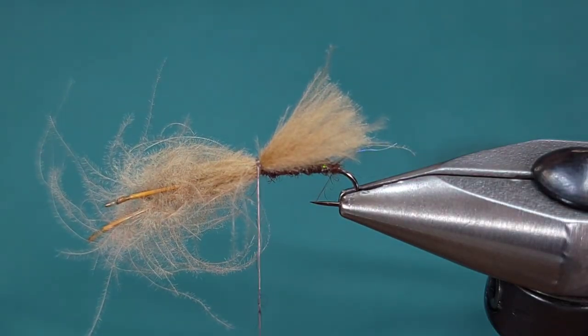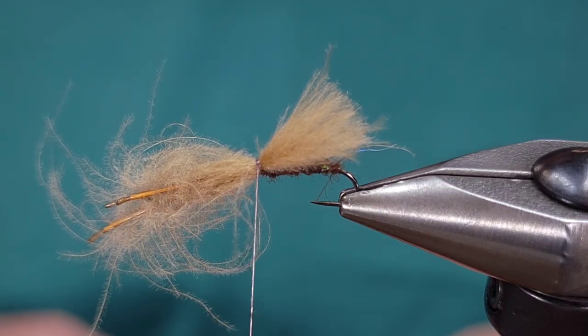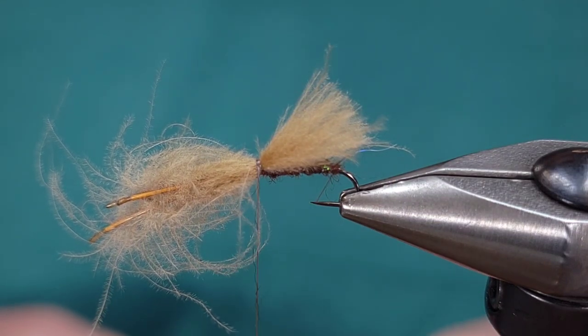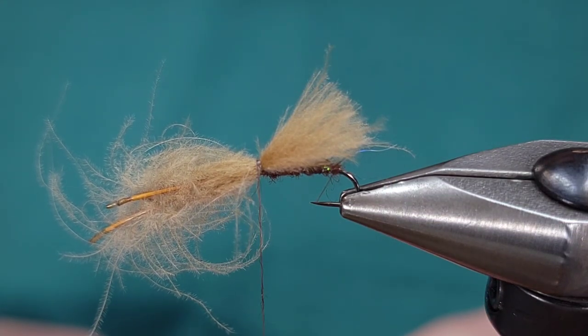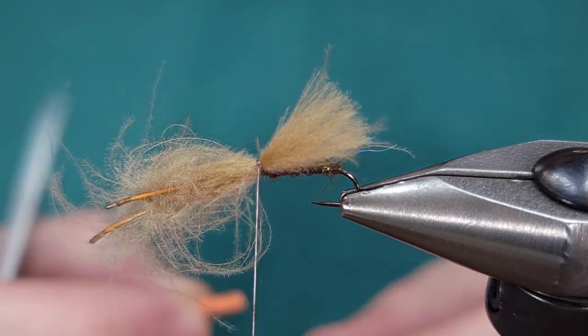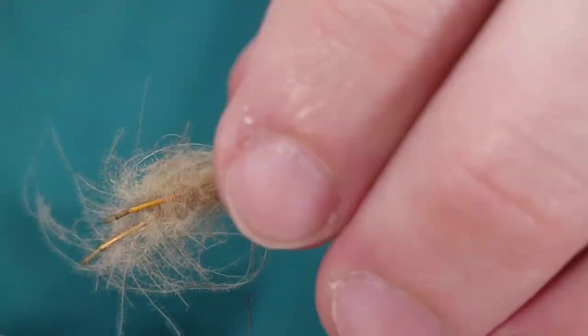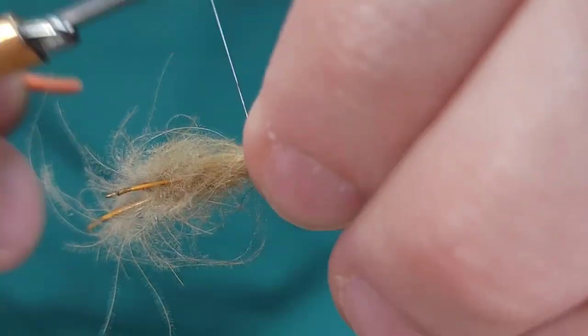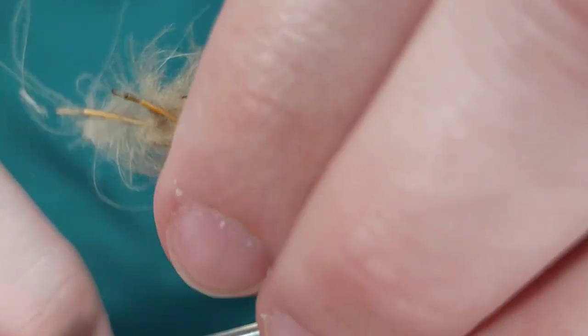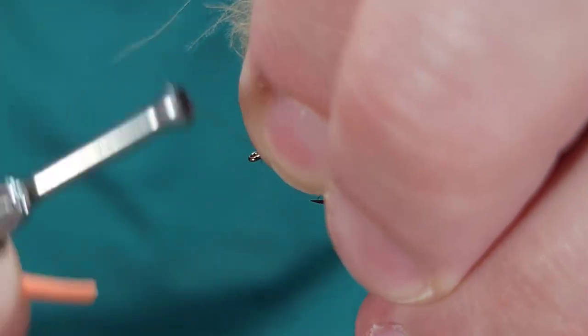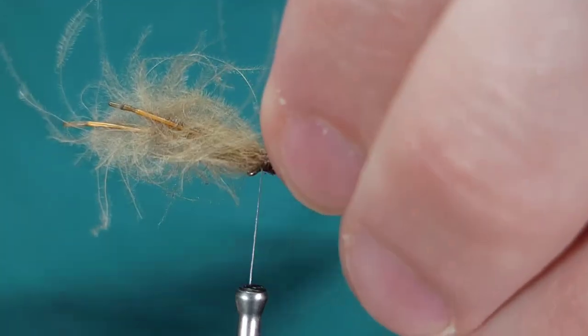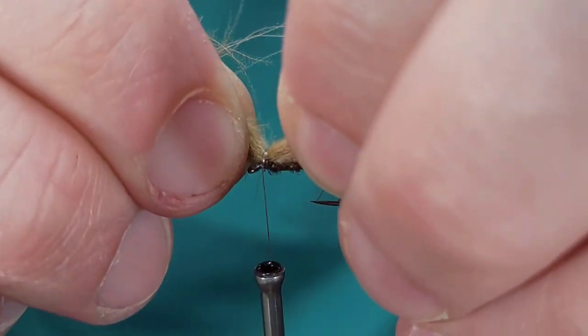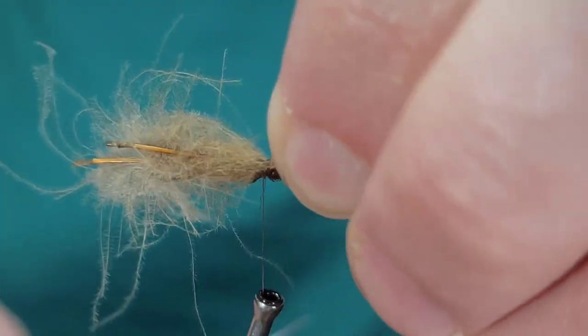Go ahead and secure the wing. If you can add a little bit of dubbing beneath this wing where you tie it in, or tie it in over the wing, it actually allows you to secure that better and will keep it from rolling and spinning. Make sure you take a couple wraps in front of the feathers. This will help keep it from spinning or rolling around the hook shank.